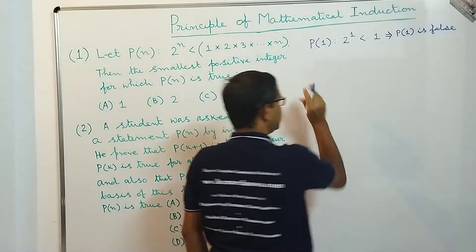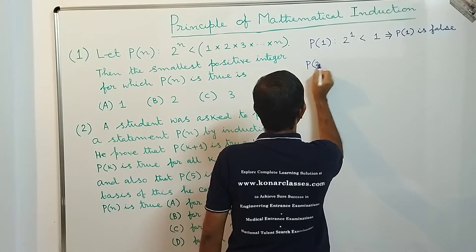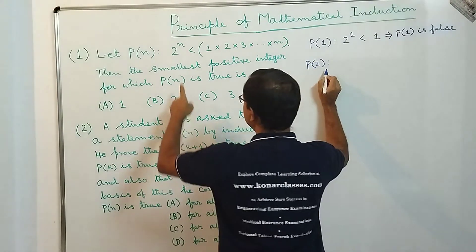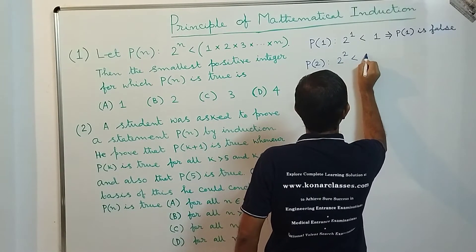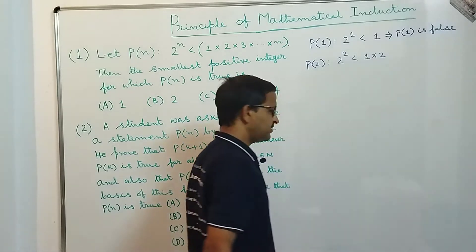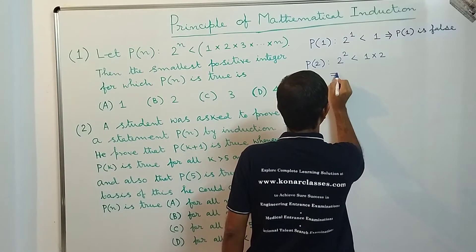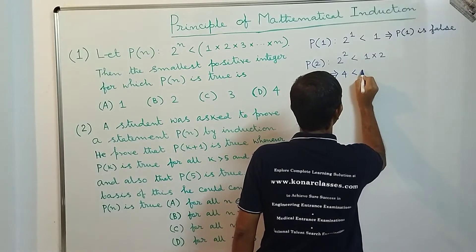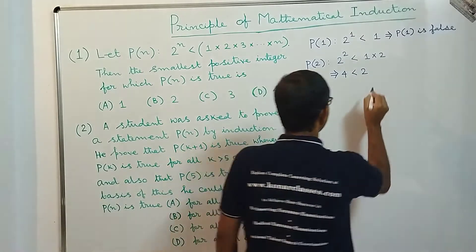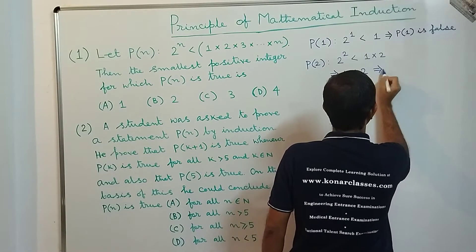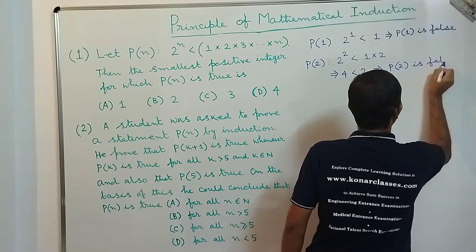It is not true for n=1. Now let's take P(2). P(2) stands for 2^2 < 1·2, which implies 4 < 2. That is not correct — 4 is not less than 2. So P(2) is false.